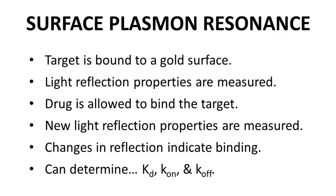In SPR, a target protein is bound to a reflective gold surface. Light reflection measurements are made. The target is then exposed to the ligand, the drug, to allow complex formation. Light reflection properties of the complex are compared to the unbound target to determine the effect of binding. SPR is used to determine KD as well as the rate constants, K-on and K-off, so SPR also reveals the kinetics of binding, the rate of binding.